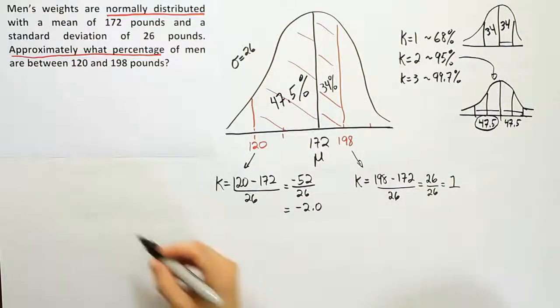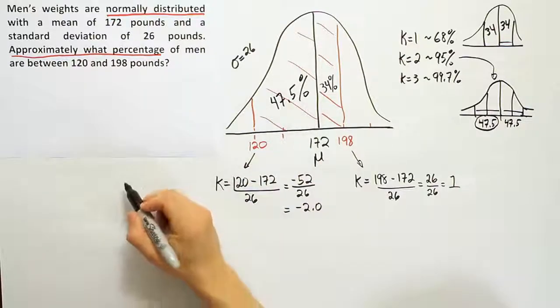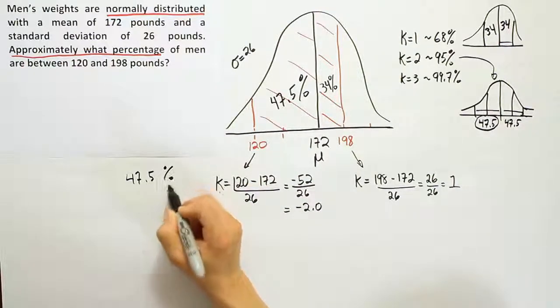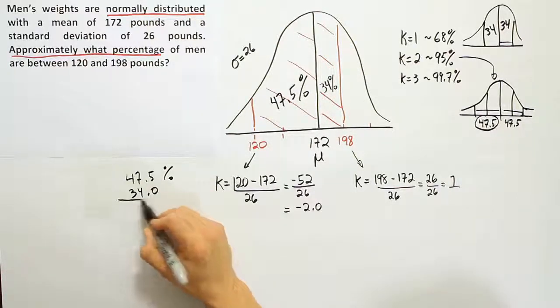When I want to know what percentage is between 120 and 198, the answer is going to be 47.5 percent added to 34.0 percent. Actually, it's approximately, of course - these are approximations, but they're very close.